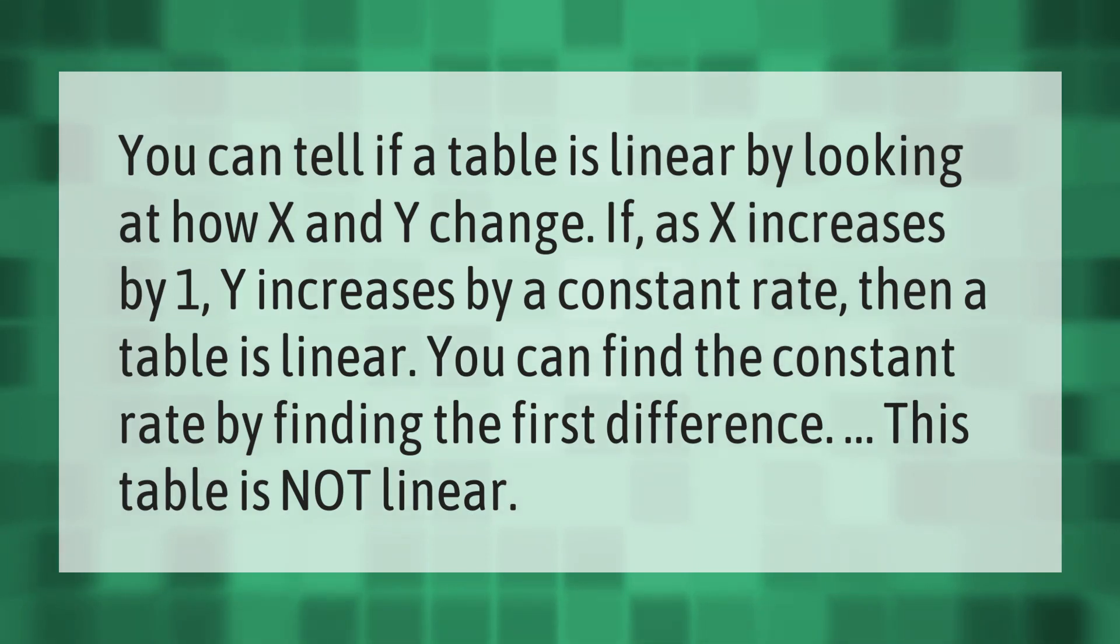You can tell if a table is linear by looking at how X and Y change. If, as X increases by one, Y increases by a constant rate, then a table is linear. You can find the constant rate by finding the first difference. This table is not linear.